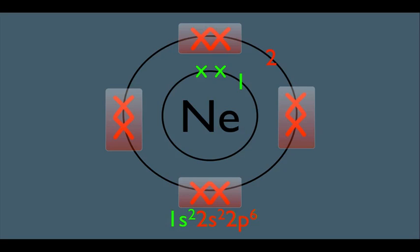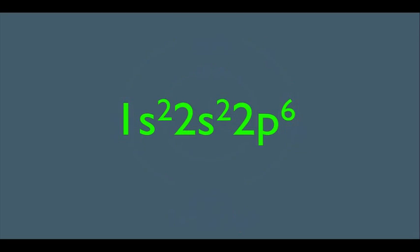For reasons that are beyond this course, it has to do with quantum mechanics. We just need to accept this. Anytime we see an electronic configuration that ends with 2s2 and 2p6, we understand that that atom has a full second shell and that this is stabilizing.